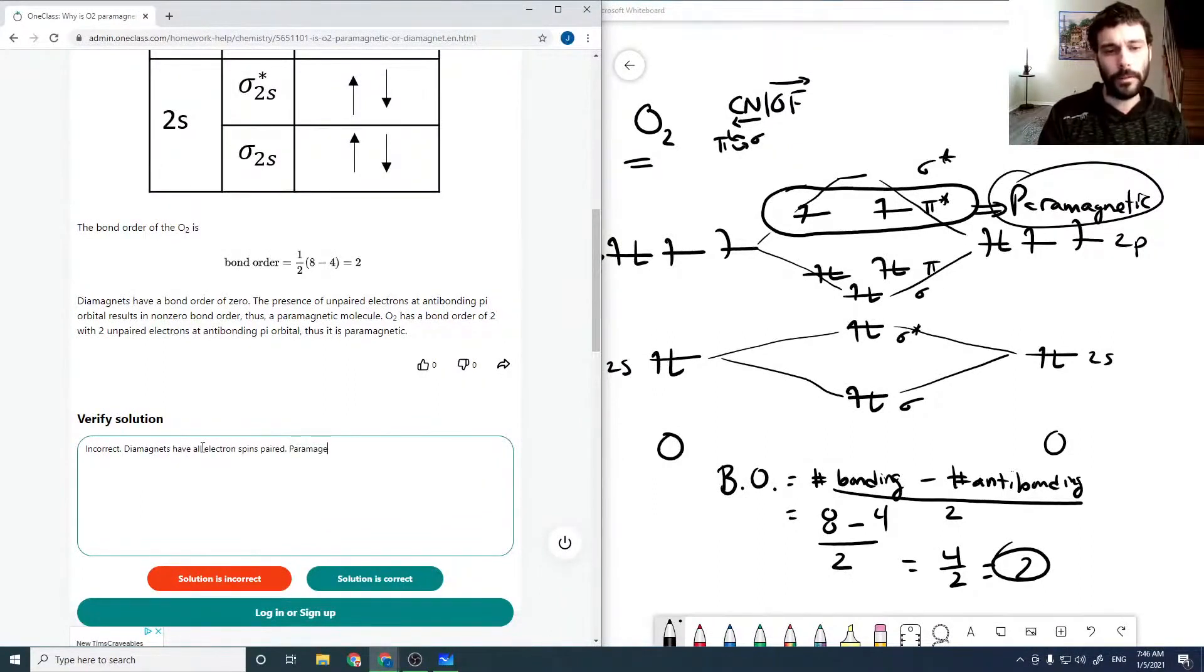Paramagnets have unpaired spins. O2 is paramagnetic due to the unpaired pi-star electrons. The presence of unpaired electrons at antibonding pi-orbital results in none, thus a paramagnetic molecule.